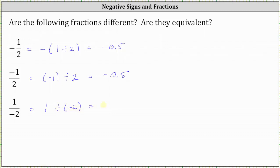So the word 'different' is somewhat vague, but I would say because the form of each fraction is different, the fractions do mean something different. But because they're all equal to negative 0.5 or negative 1 half, they are all equivalent.